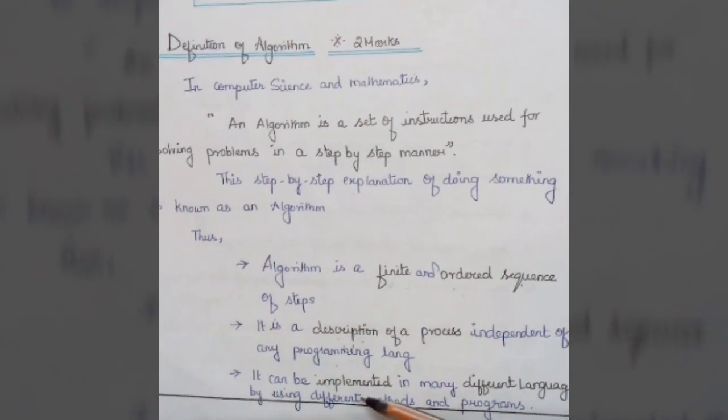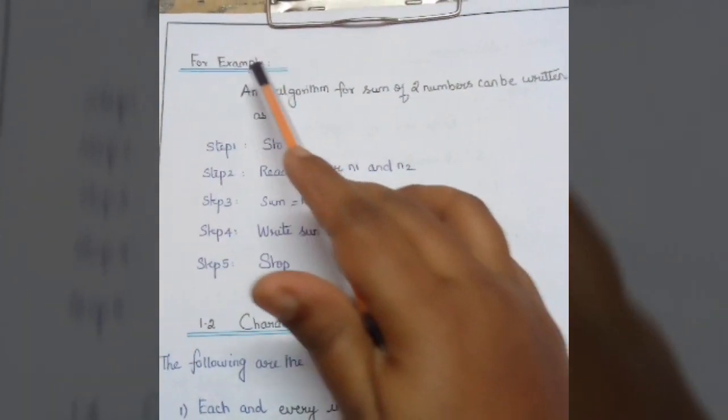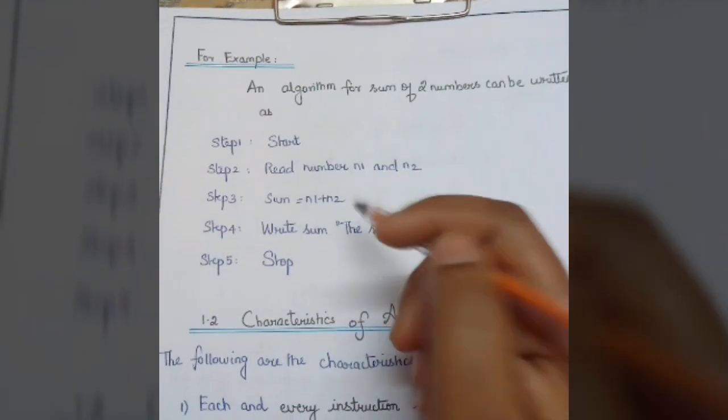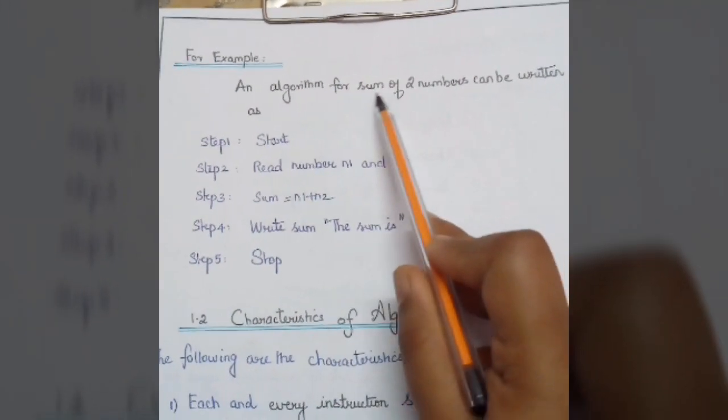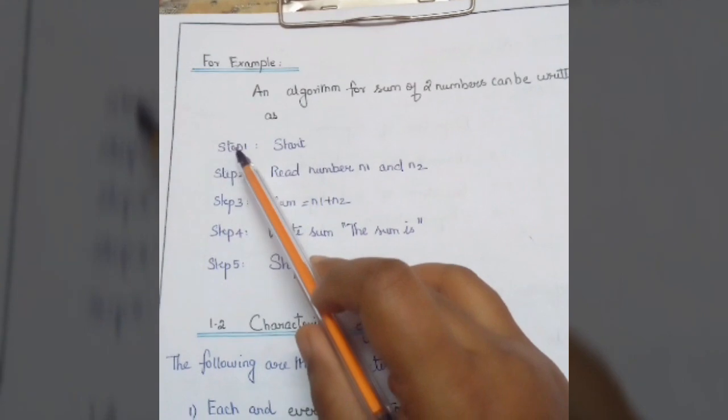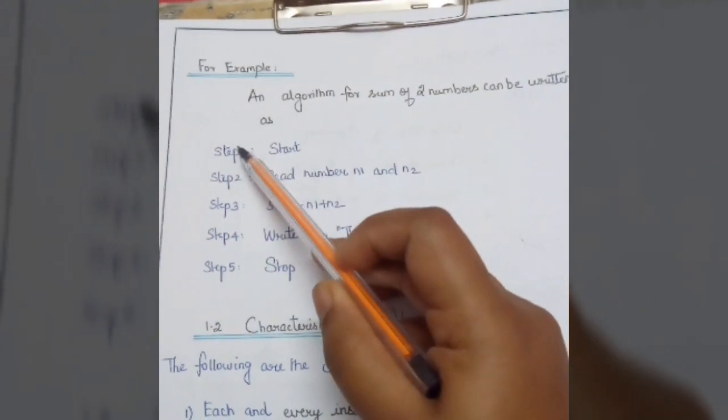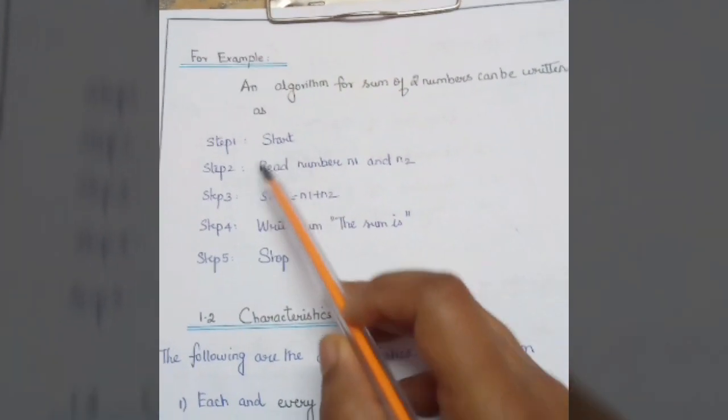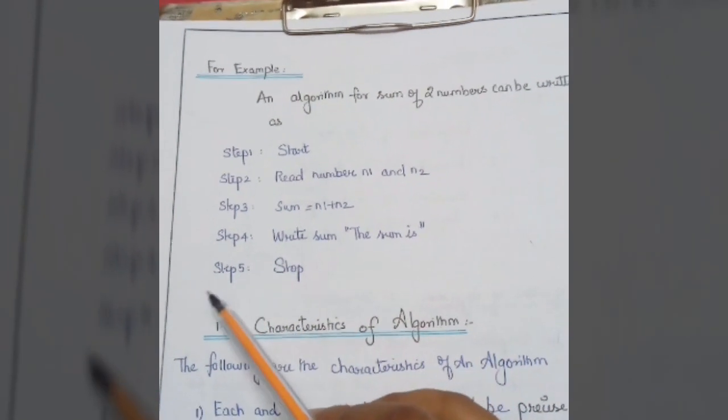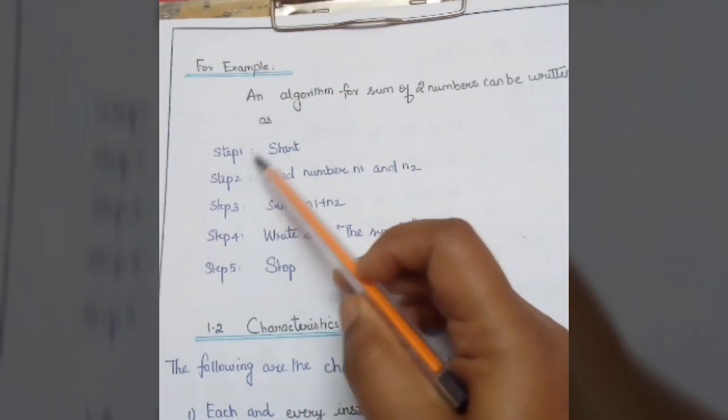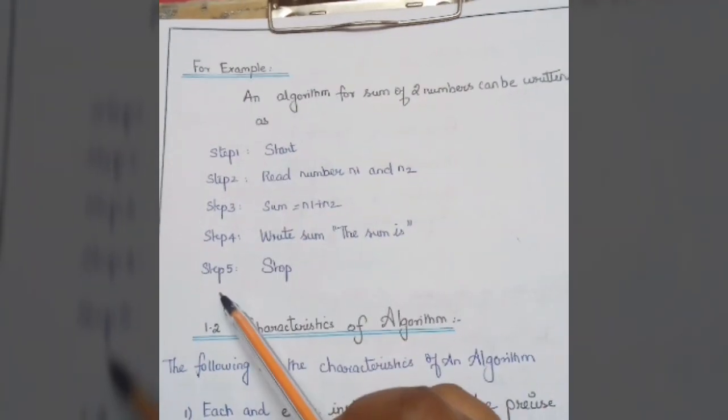Next, we are going to see an example of an algorithm. This is an example for sum of two numbers. An algorithm must start with step one, which is start, and it has to be in order and sequence as I told before. By default, the first step and the last step will be start and stop.